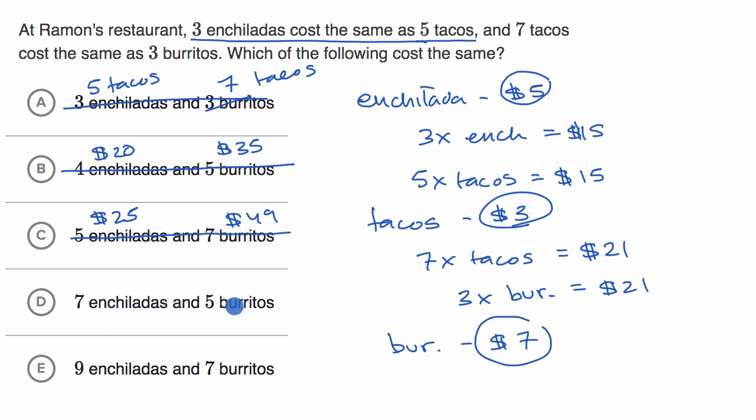Seven enchiladas and five burritos. This is interesting. Seven enchiladas, seven times five, $35. Five burritos, five times seven, $35. This one looks good. And let's see if we can just rule this one out as well. Nine enchiladas, that's going to be $45. Seven burritos are $49. And so these also are not equal.